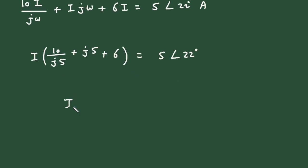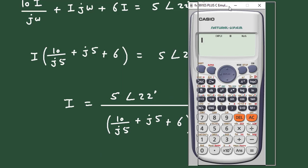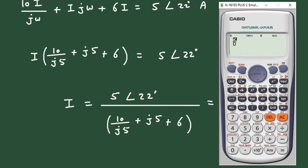Now, here we can directly take this part on this side. It will be I is equal to 5 at an angle 22 degree divided by this part. So, let us copy this from here directly. Now, it is equal to, we can solve this in calculator. So, 5 at an angle 22 divided by 10 divided by j into 5 plus j into 5 plus 6 bracket close. It is equal to this, it is equal to this in rectangular form.